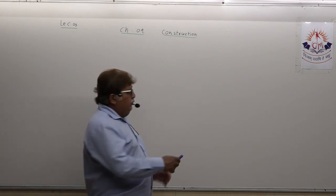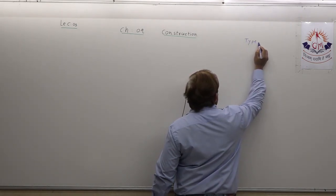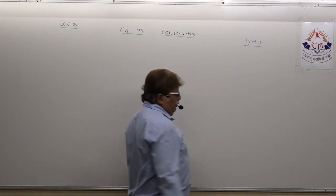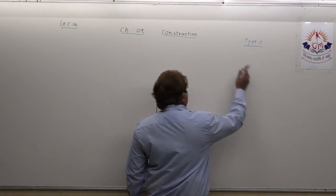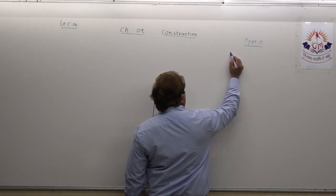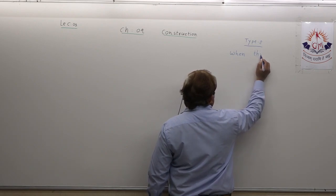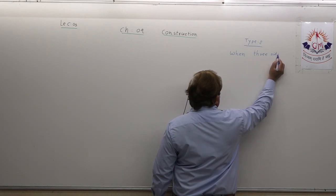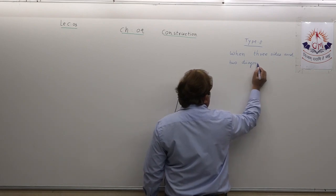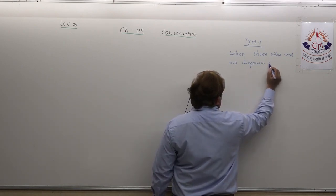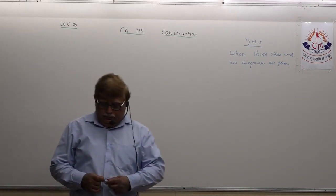Today we are going to construct a quadrilateral which I call type 2 — a new construction under a particular condition. That condition is: when three sides and two diagonals are given. You have to construct a quadrilateral in which three sides and two diagonals are given. This is the basic title of the construction we are going to perform.